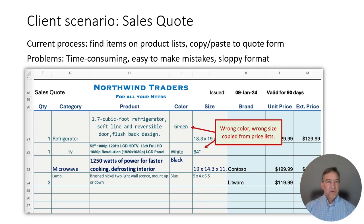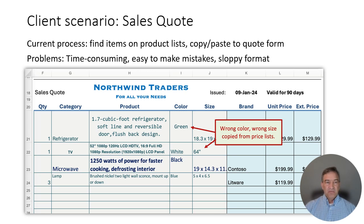To set the stage, we have a client who came to us with a scenario: they have a sales quote and found it very cumbersome for their sales associates to fill out. The process was to look through a bunch of different product lists in various other spreadsheets, find the product they wanted, then copy and paste information onto their sales quote — including category, product name, color, size, and prices. They found it extremely time consuming. You can imagine manually searching through different lists, copying and pasting, and it's easy to make mistakes. It can also bring things over in a sloppy format.